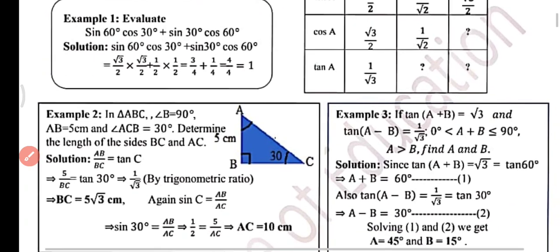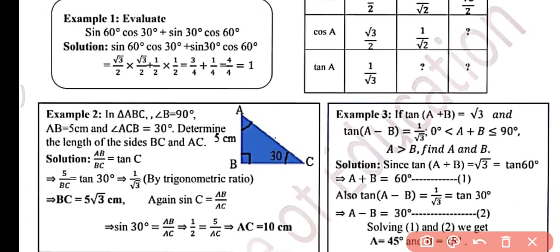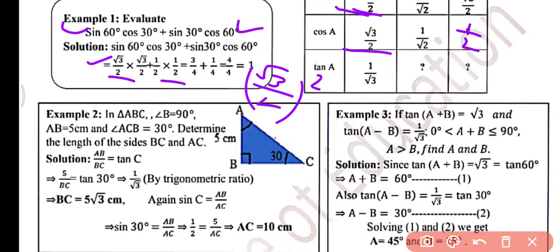Example 1: Evaluate sin 60 degree times cos 30 degree plus sin 30 degree times cos 60 degree. Sin 60 degree is root 3 by 2 and cos 30 degree is root 3 by 2, plus sin 30 degree is 1 by 2 and cos 60 degree is 1 by 2. So root 3/2 into root 3/2 gives 3 by 4, and 1/2 into 1/2 gives 1 by 4. Taking LCM and simplifying gives 4 by 4, that is 1. So sin 60 cos 30 plus sin 30 cos 60 equals 1.